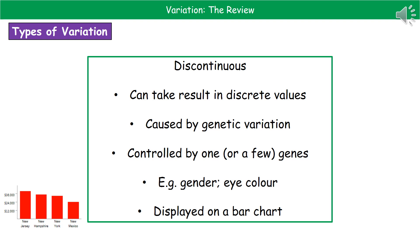The way we would display discontinuous variation, if that question came up on an exam paper, is on a bar chart. The key feature of bar charts is there's always a space between the bars. Be careful not to mix up your histograms and bar charts — they could ask you to state which one to use, or even draw one on the exam. So if it's continuous, no spaces between the bars; if it's discontinuous, you do have spaces between the bars.